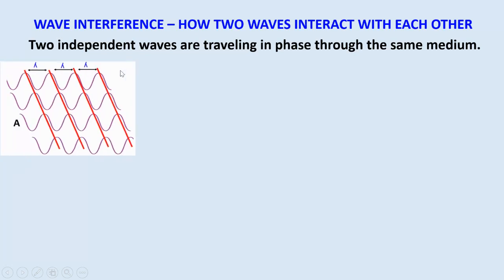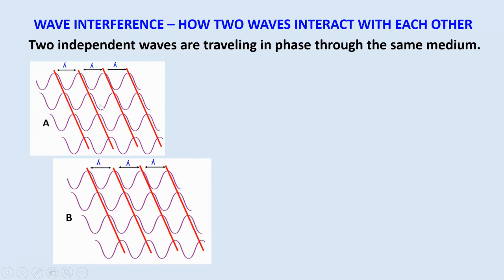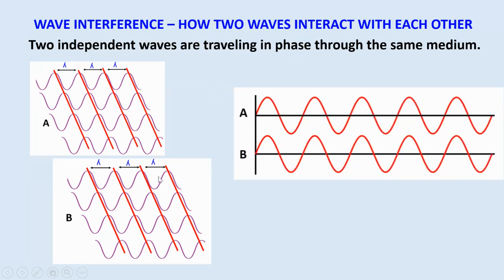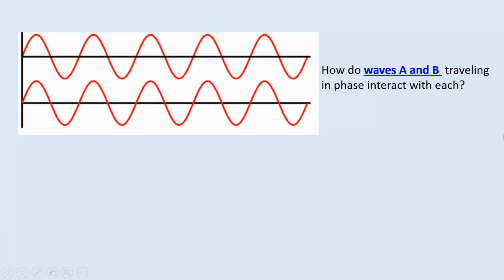Let's look at two independent waves A and B that are traveling in phase through the same medium. Looking at the front view of those two waves, waves A and B have crests aligning with crests and troughs aligning with troughs at every point. We say these waves are traveling in phase. So, how do waves A and B, traveling in phase, interact with each other?